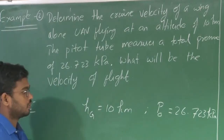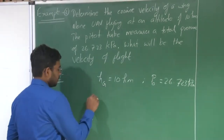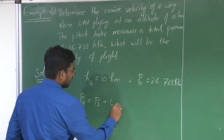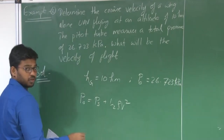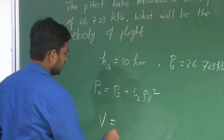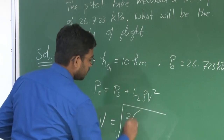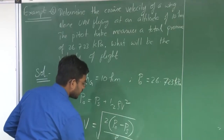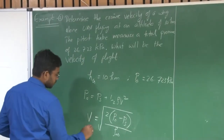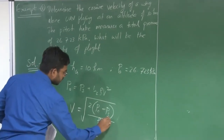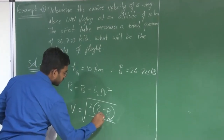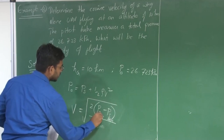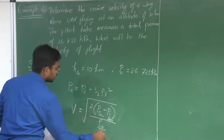To find the velocity, we need the differential pressure. P_0 equals P_s plus half rho v squared. To find the velocity at that altitude, we need the differential pressure, which is total pressure minus static pressure, and the corresponding density at that altitude. We need to find the static pressure at 10 kilometers. Since we know P_0 at 10 kilometers and density at 10 kilometers, please make a correction — it is 10 kilometers throughout.